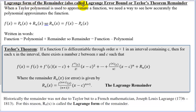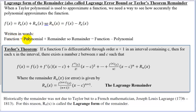The Lagrange form of the remainder, also called the Lagrange error bound, or Taylor's theorem remainder. When a Taylor polynomial is used to approximate a function, we need a way to see how accurately the polynomial approximates the function. The function equals the approximation plus the remainder, or plus the error. So the remainder equals the function minus the polynomial approximation.